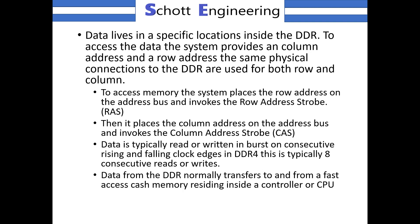Data is typically read or written on consecutive rising and falling clock edges in the DDR — this is typically eight consecutive reads or writes. Data from the DDR is normally transferred to and from a fast access cache memory residing in a controller or CPU.